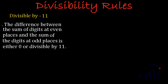Now we are going to learn the divisibility rule of 11, and this is also one of the very simple rules of divisibility. The rule is: the difference between the sum of the digits at even places and the sum of the digits at odd places is either 0 or divisible by 11.